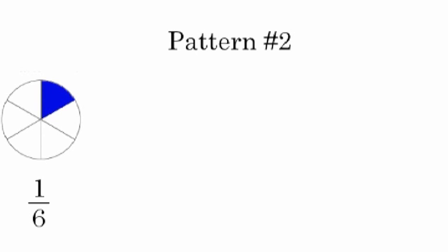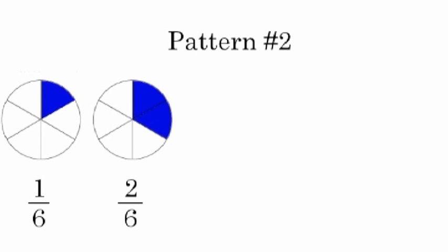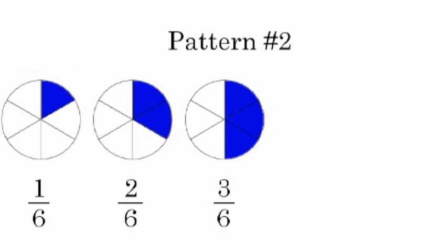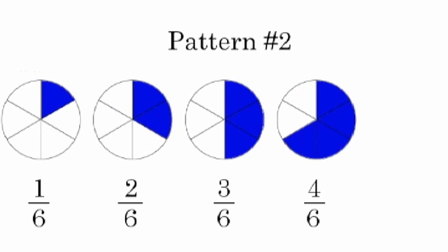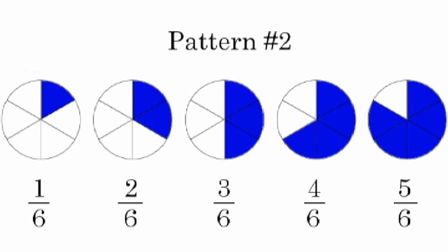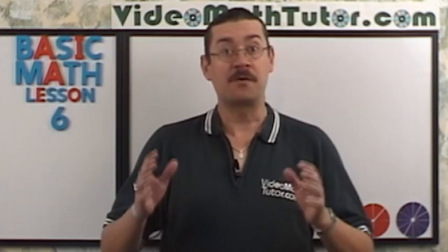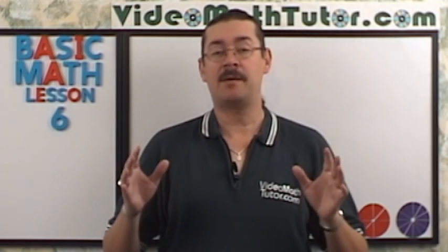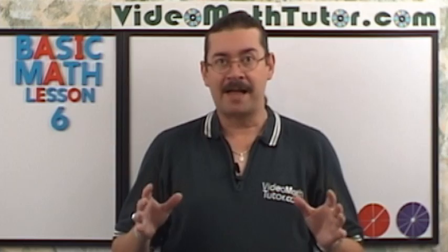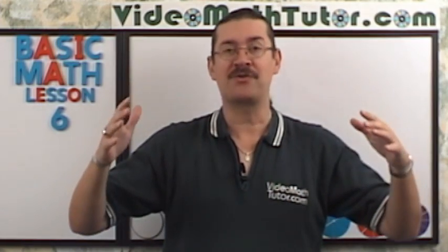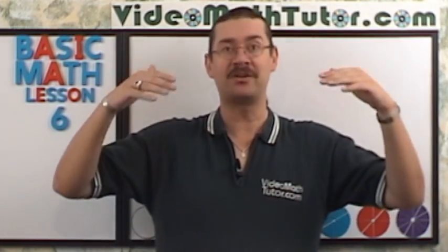Pattern number 2: Let's keep the denominators the same and increase the size of the numerators — 1 sixth, 2 sixths, 3 sixths, 4 sixths, and finally 5 sixths. For this pattern, if the denominators stay the same, the value of the fraction actually gets larger as the numerator gets larger.